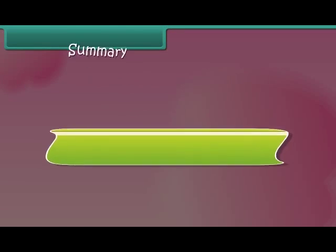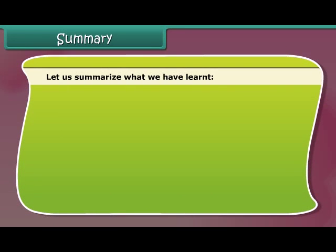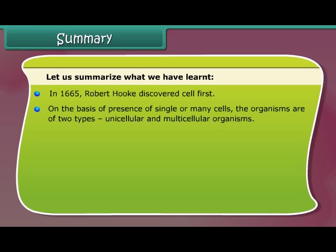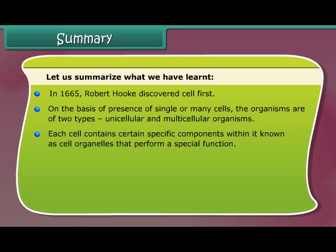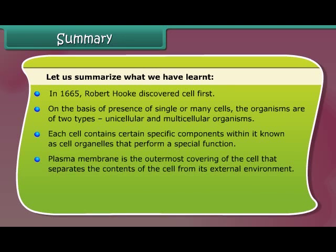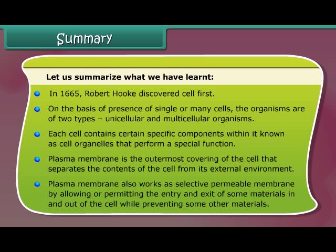Let us summarize what we have learned. In 1665, Robert Hooke discovered the cell first. On the basis of the presence of single or many cells, organisms are of two types: unicellular and multicellular. Each cell contains certain specific components known as cell organelles that perform special functions. The plasma membrane is the outermost covering of the cell that separates the cell's contents from its external environment. The plasma membrane also works as a selectively permeable membrane, allowing or permitting the entry and exit of some materials while preventing others.